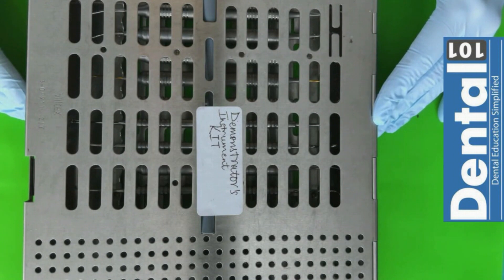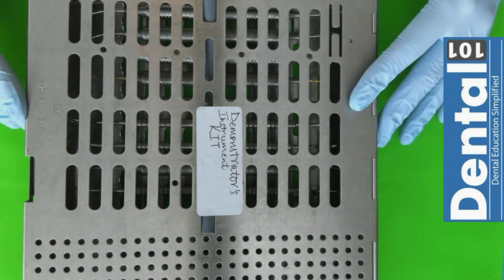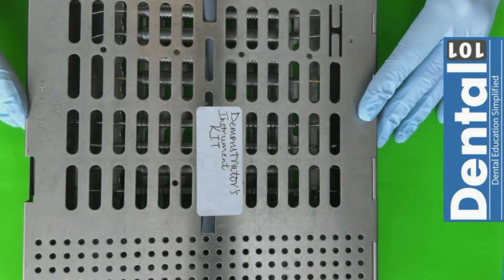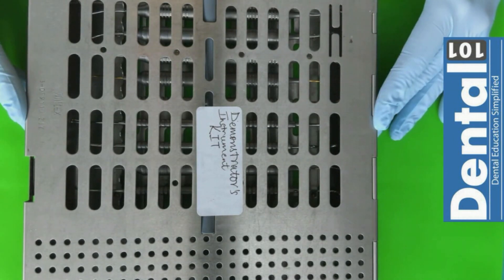In previous videos we have seen that we are going to have some instruments on our bracket table and also some instruments in our trolley. This cassette that you are seeing right now contains the restorative instruments that you are going to use for your tasks. This cassette is going to be on top of the trolley next to your working station.